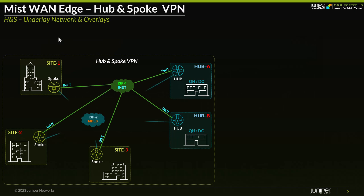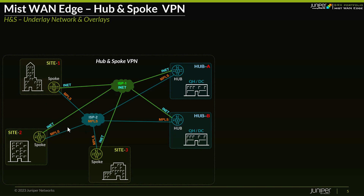If we look at a typical hub-and-spoke topology, in this example I'll be showing three sites — one, two, three — designated as our spokes, and we'll have two hubs: hub A and hub B. We also have an underlay network. In this case, we can imagine these spokes are connected to service provider networks with two physical links.